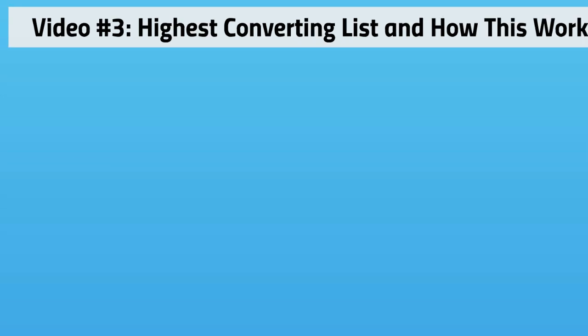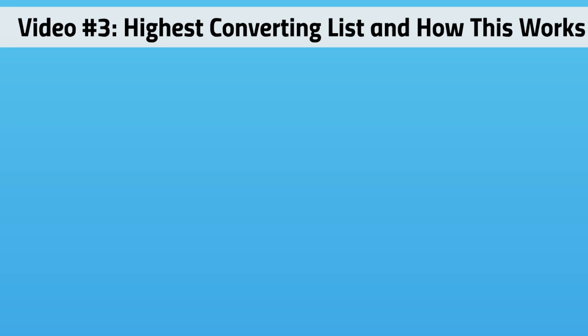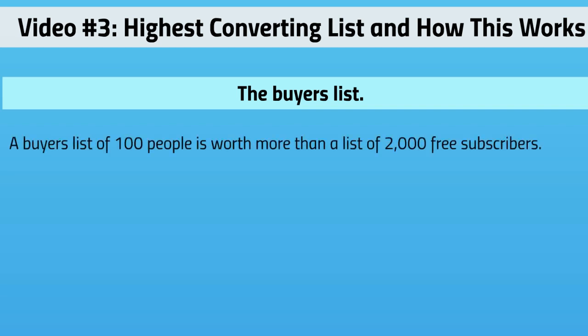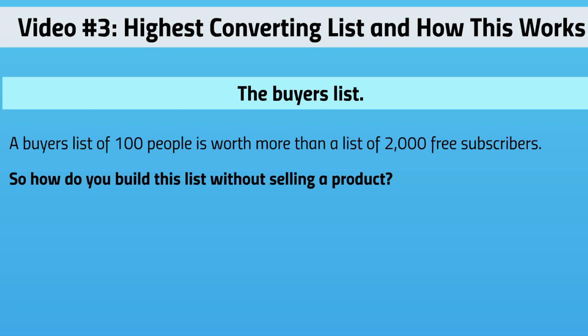Welcome back — this is video number three, and we're going to talk about the highest converting list and how it works. As discussed in the previous video, this is the buyer's list. A list of 100 people is worth way more than a list of 2,000 free subscribers, because these are people who have actually purchased a product. So how do you build a list without selling a product? That doesn't really make sense — but after I show you this, it will.